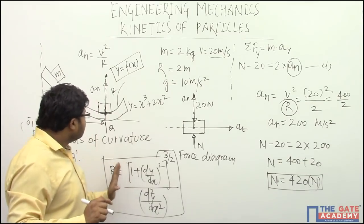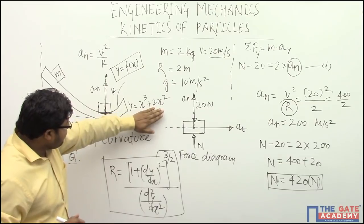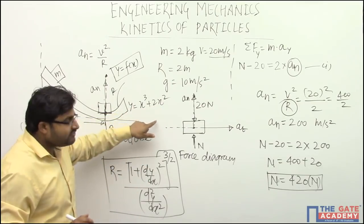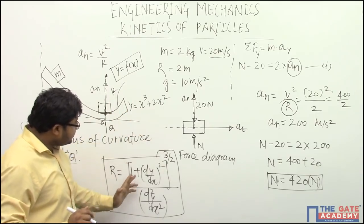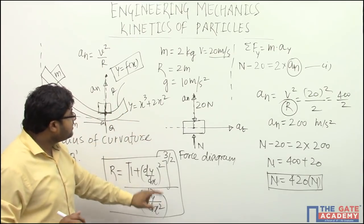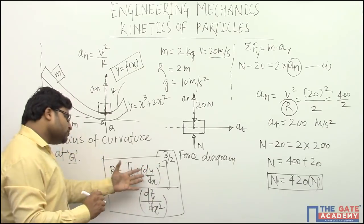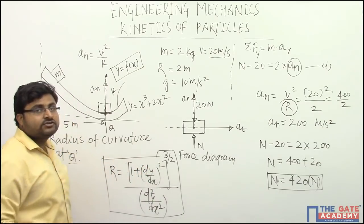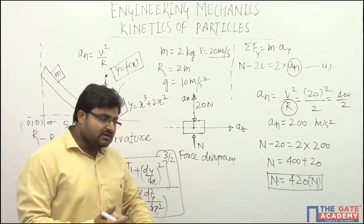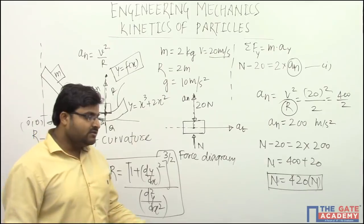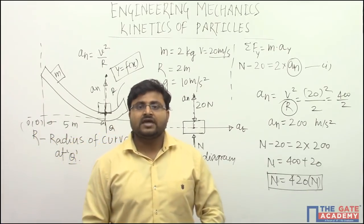So for that you should always keep in mind this particular expression which is for radius of curvature. For this function you have to find dy by dx and then put x equal to 5. For this function you have to find d2y by dx square and then put x equal to 5. Those two values you have to keep here and then solve accordingly, you will get the radius of curvature. So that is a type of variation that is possible for the same problem. Thank you.